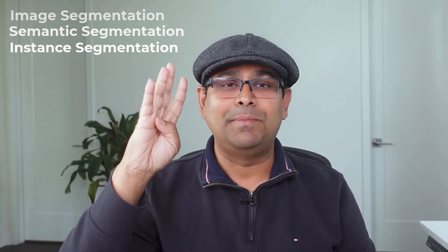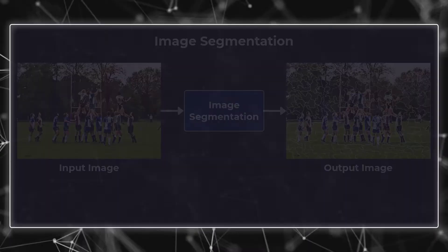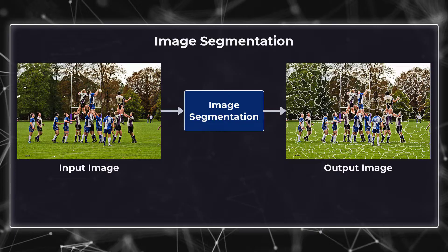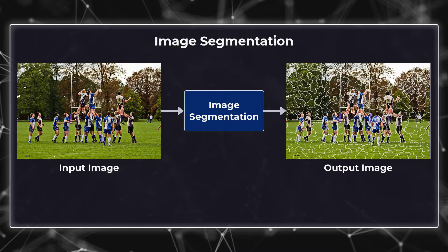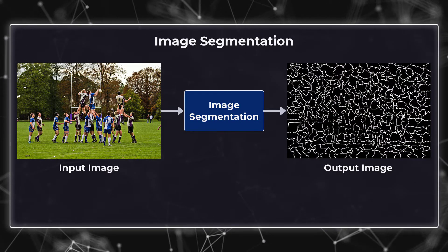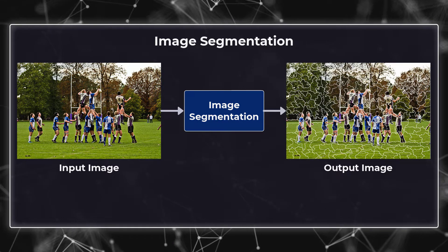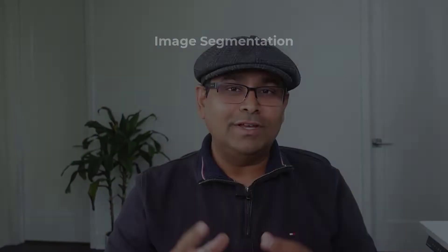Let's learn four concepts today: image segmentation, semantic segmentation, instance segmentation, and panoptic segmentation. Image segmentation refers to dividing the image into groups of pixels based on some criteria. A segmentation algorithm takes an image as input and outputs a collection of regions or segments. You can represent these regions as contours or as masks. The mask representation is much more common these days. We assign a different grayscale value to differentiate between different segments in this representation. Often we use pseudo-coloring to color these segments for better visualization.